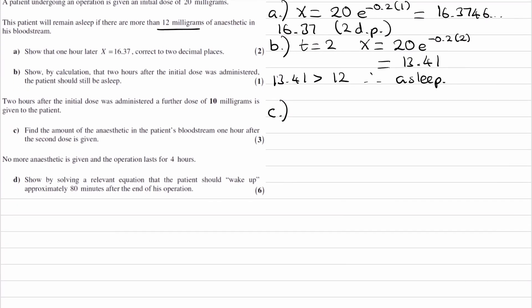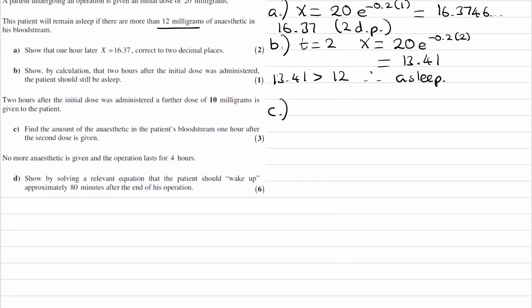Now this question starts to get a bit harder. Two hours after the initial dose was administered, a further dose of 10 mg is given to the patient. Find the amount of anaesthetic in the patient's bloodstream one hour after the second dose is given. We have two doses: the first dose is 20 mg. Think about how long each dose has been in the patient. The second dose is 10 mg, with a two-hour interval between them. Once you have those two times, put them into the exponential equations and add them up to get the overall amount.